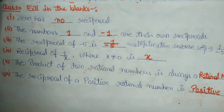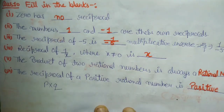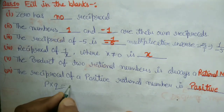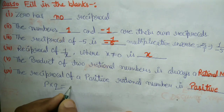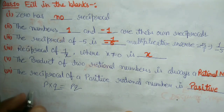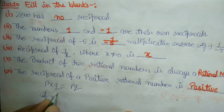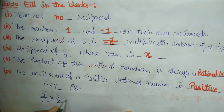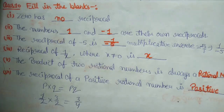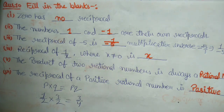Fifth: the product of two rational numbers is always a rational number. Means agar hum two rational numbers p and q ka product karein, toh result bhi rational number hoga. For example: 1 upon 2 into 3 upon 2 — toh yeh rational number kya hoga? 3 by 4. Toh do rational numbers ka product hamesha rational number hi hoga.